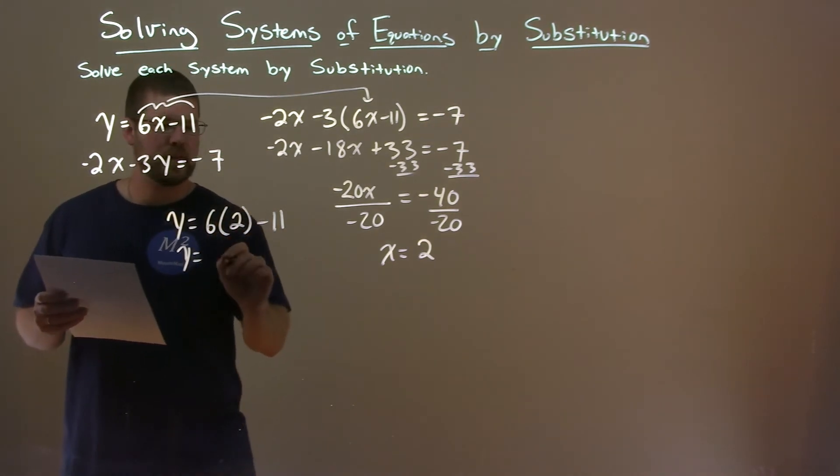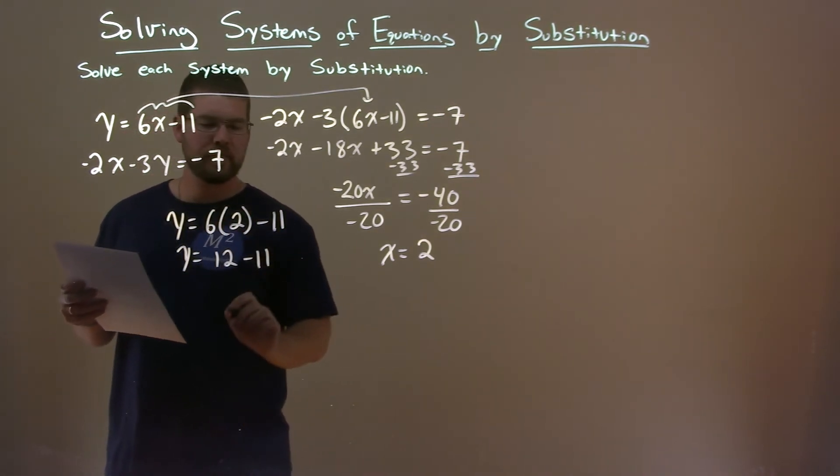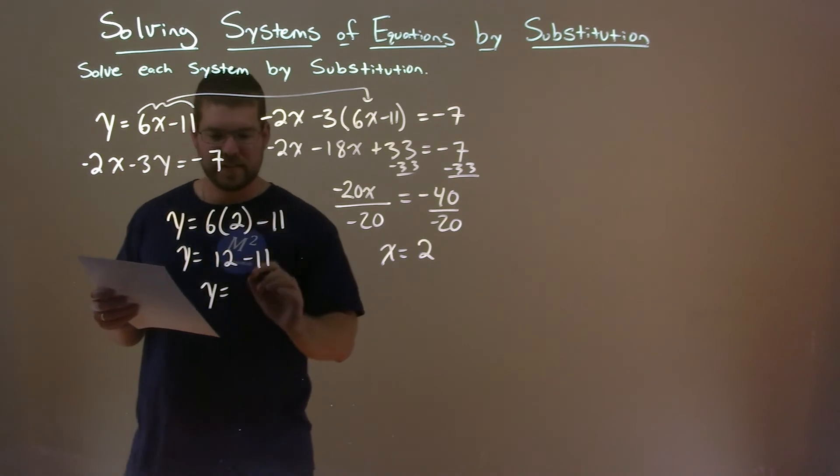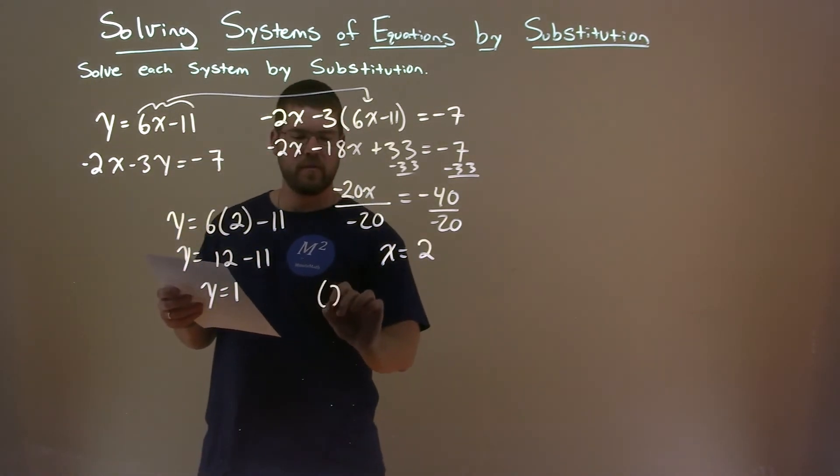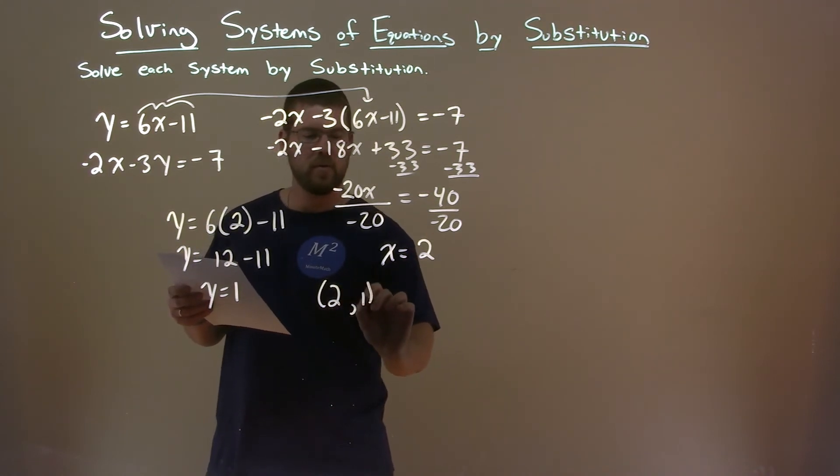y equals 6 times 2 is 12, minus 11. And 12 minus 11 is 1. So we have y as 1 and x as 2. And so my final answer is 2 comma 1.